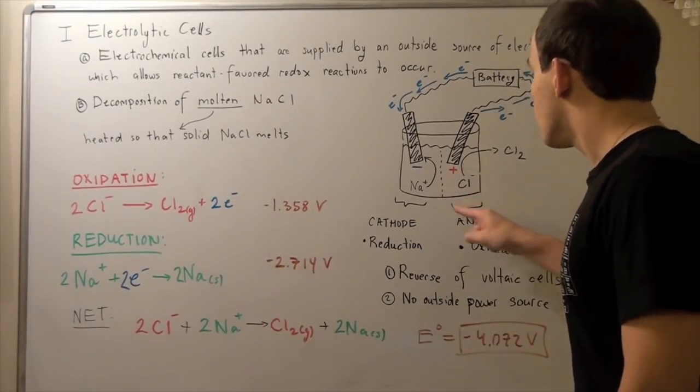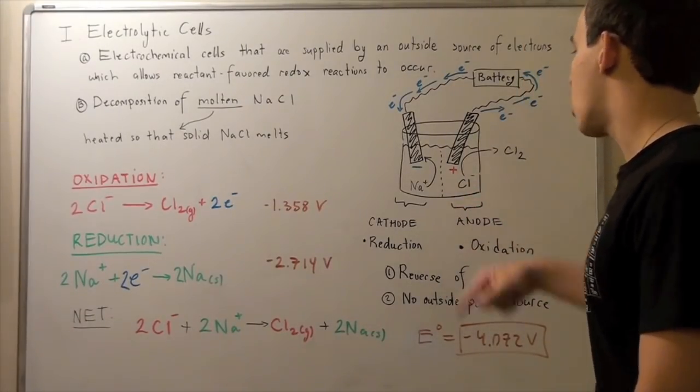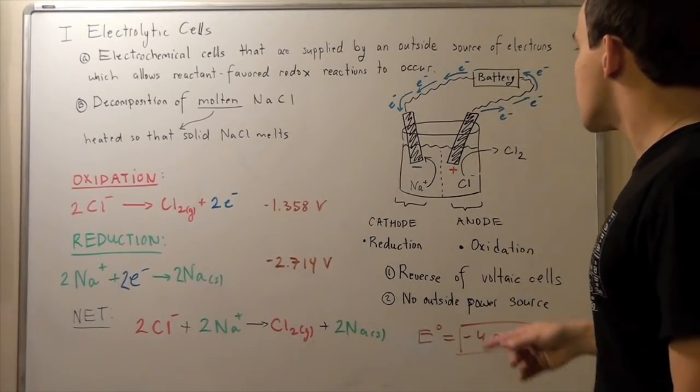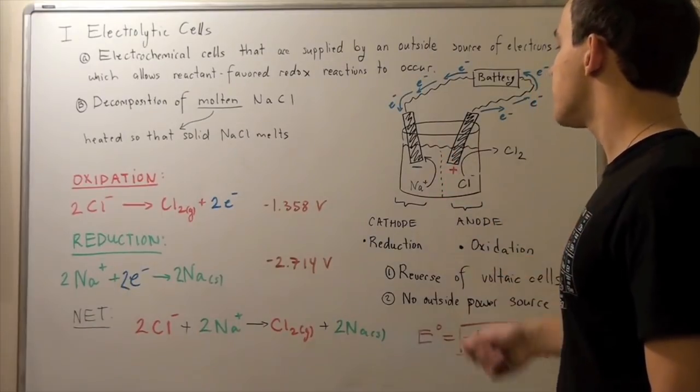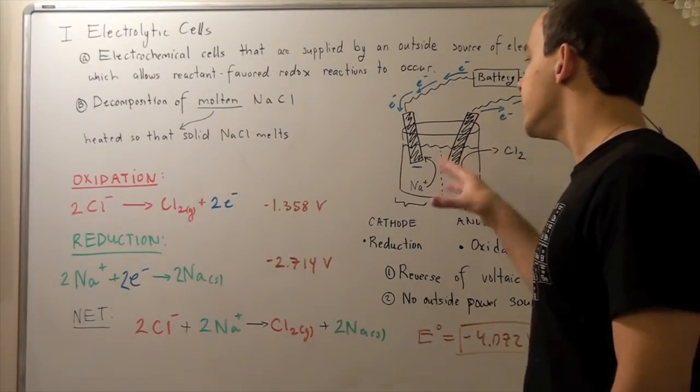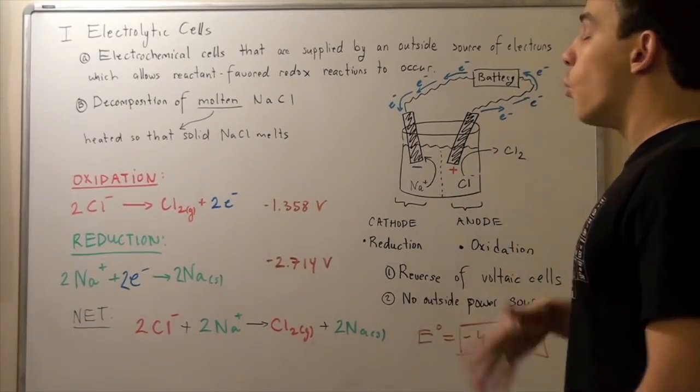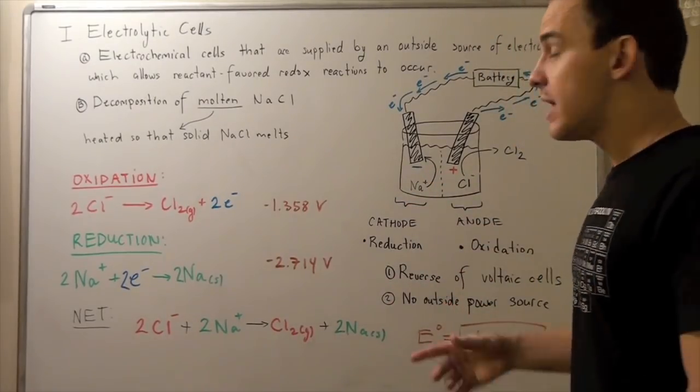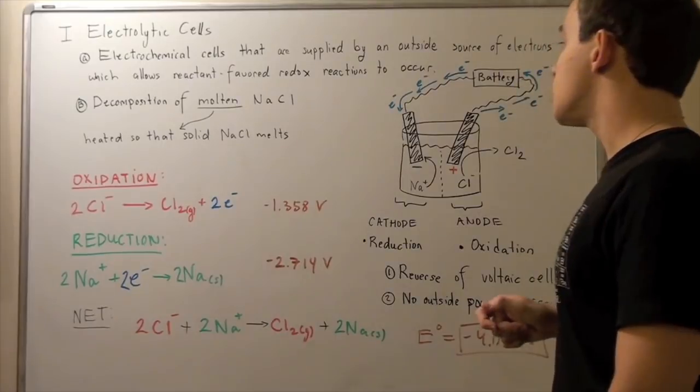Likewise, these chloride atoms are negatively charged. So they will be attracted to this positively charged electrode. So we'll have a separation of sodium and chloride in our liquid. Now, what happens when our sodium positively charged ion hits this negatively charged electrode?